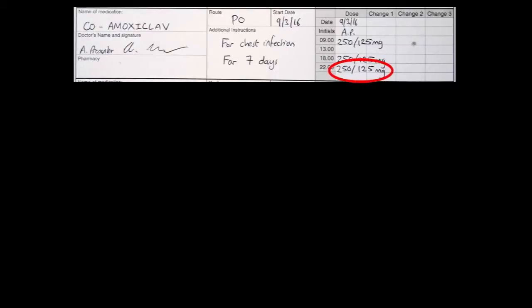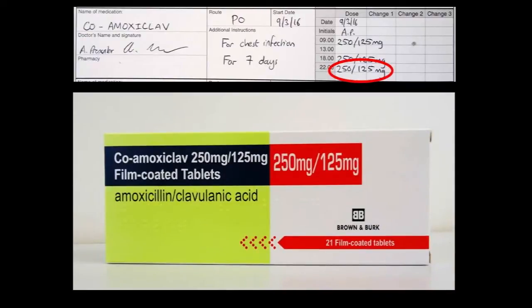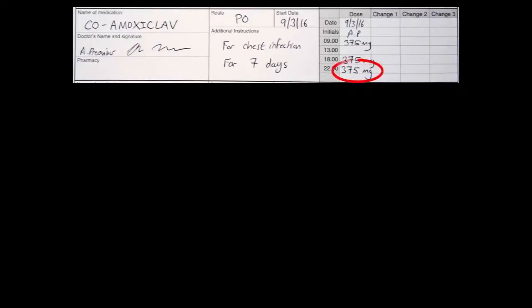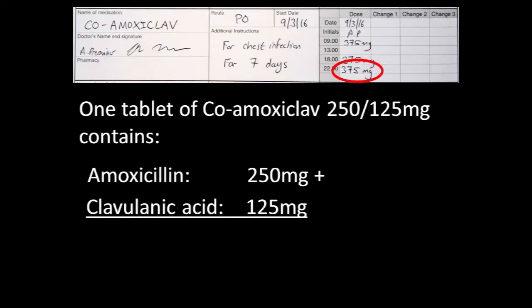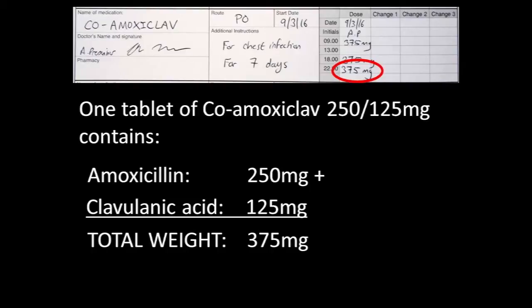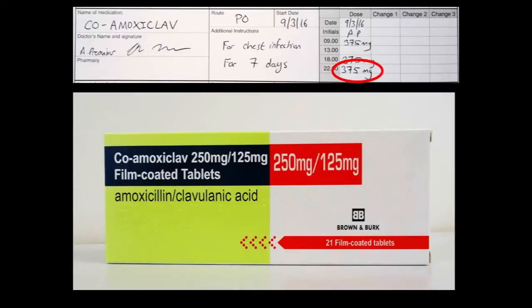If we have a prescription that says 250/125 milligrams, this is quite easy to understand - it corresponds to one of the lower strength tablets: 250 milligrams of amoxicillin and 125 milligrams of clavulanic acid. But once again we'll often see prescriptions where the weight of the two ingredients is combined, so the dose reads 375 milligrams. You can see how this is a combination of 250 milligrams of amoxicillin plus 125 milligrams of clavulanic acid to give a total weight of 375 milligrams, which corresponds to one of the lower strength tablets.